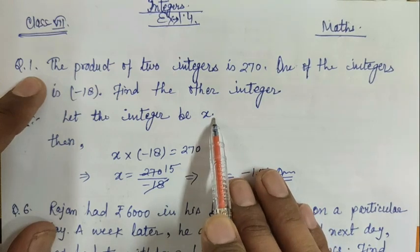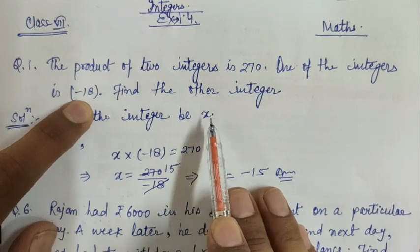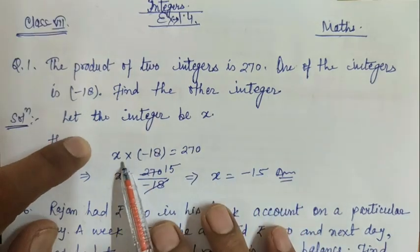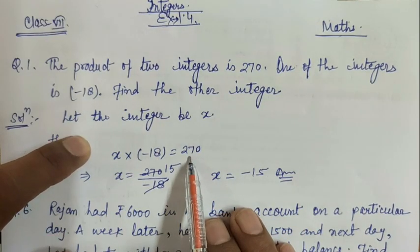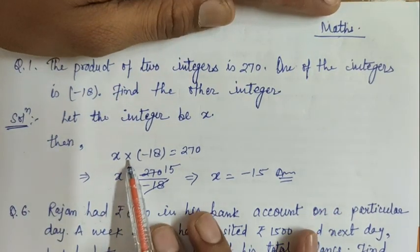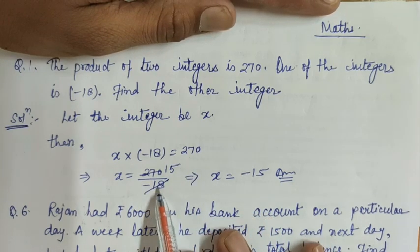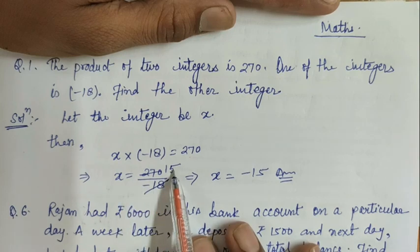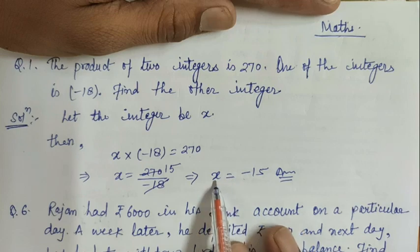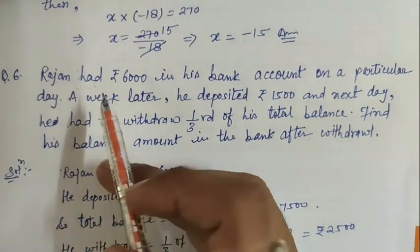We will find out the second integer which will be x. So let the integer be x. One number is given and the second number is x. According to the question, x into -18 equals 270. So we will find x by keeping it single and shifting to this side. So this will divide: x = 270 / -18. We will divide by 18, which goes 15 times. Since it is unlike signs, the result is negative, so x = -15.